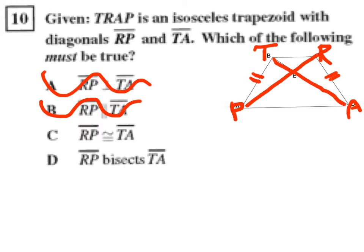We have two left, and we have to determine does line segment RP bisect line segment TA? Okay, no, they don't, it doesn't split it in half. This part is not congruent to this part, and this part is not congruent to that part. So, D can't be it either.